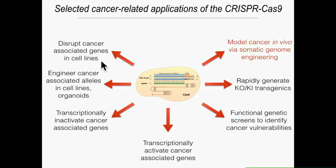CRISPR has been used in a wide range of applications: modifying cell lines, modifying the germline, doing screens, and modifications of the system to turn genes on and off. We decided to ask whether the system could be used to modify genes directly in vivo, rather than having to make those mutations in the germline and breed them in. Could we skip the germline step?